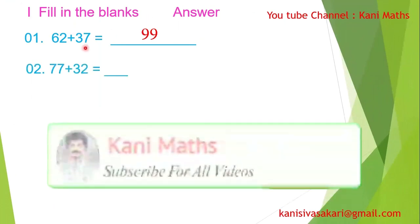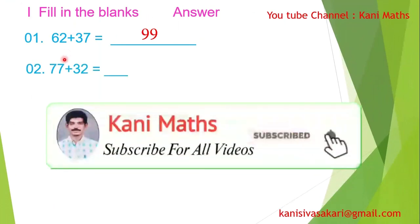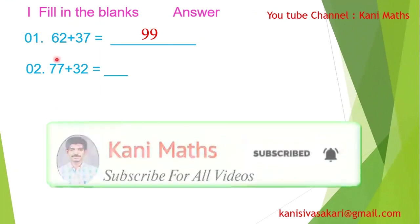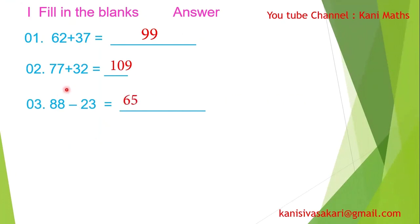Second sum: 77 plus 32. 7 plus 2 is 9, 7 plus 3 is 10. The answer is 109. Now for addition — subtraction: 88 minus 23. First, 8 minus 3.